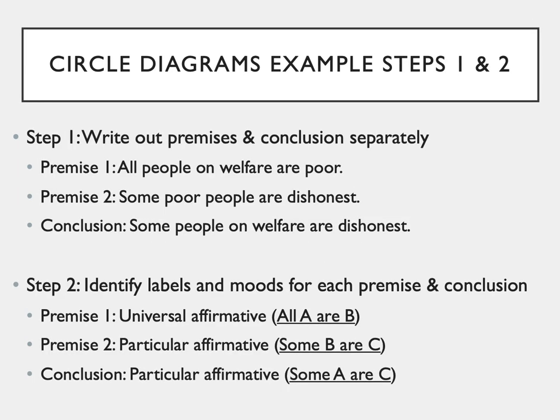Step one is to write out premises and conclusions separately. Premise one: all people on welfare are poor. Premise two: some poor people are dishonest. And the conclusion: some people on welfare are dishonest. Our job is to find out if the conclusion is always true if the premises are true — that is, every combination of circle diagrams from premise one and premise two must be consistent with the circle diagrams that align with the conclusion.